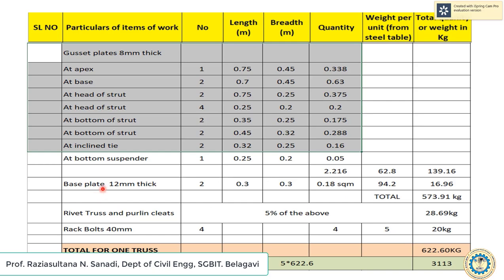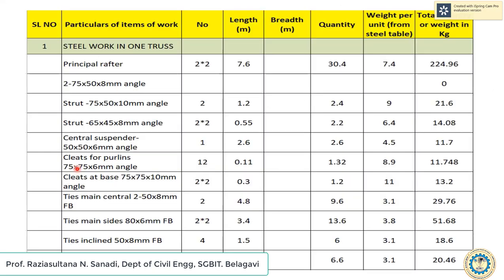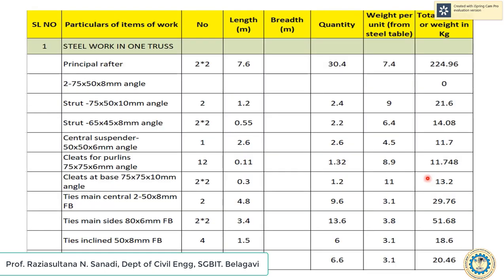Next is the base plate, 12 mm thick, dimensions 30 cm x 30 cm as shown in the plan. With 1 base plate at each support, both sides gives 2 total. Quantity is 2 x 0.3 x 0.3. Multiplying by weight per unit gives the total quantity. Adding all quantities of steel work gives 573.91 kg.